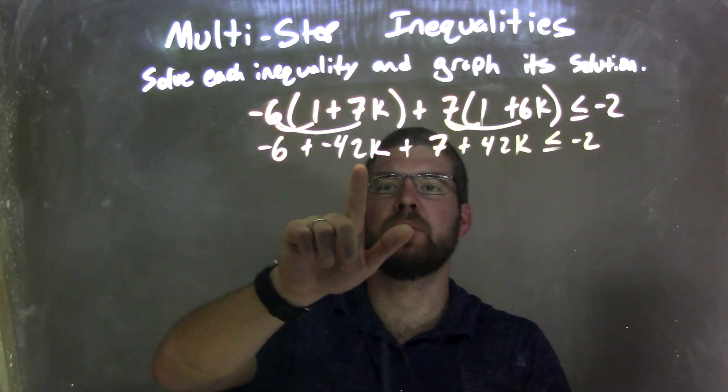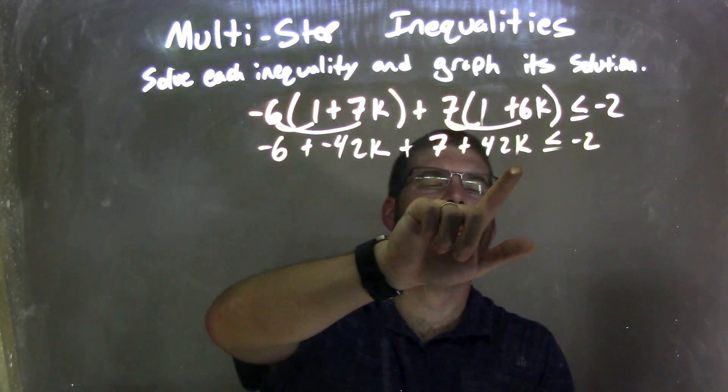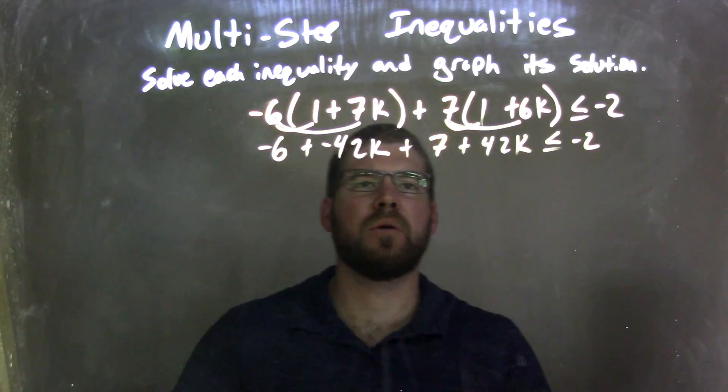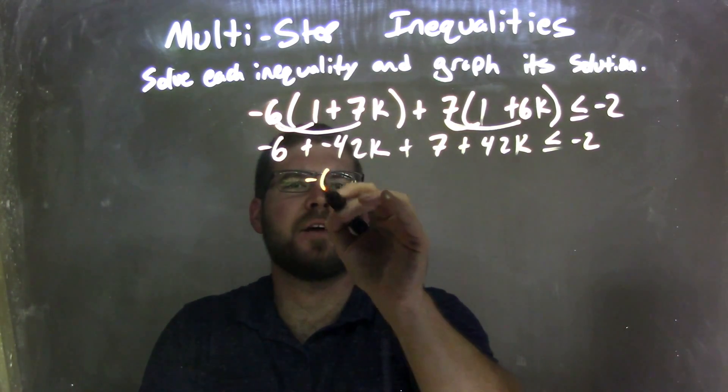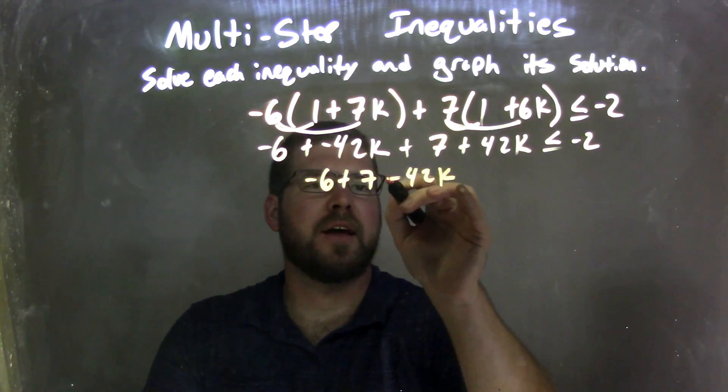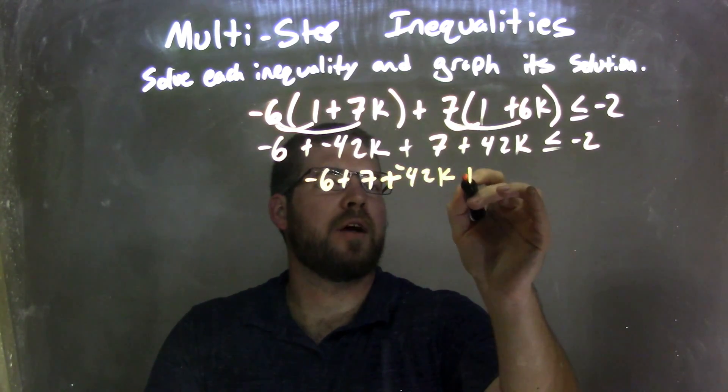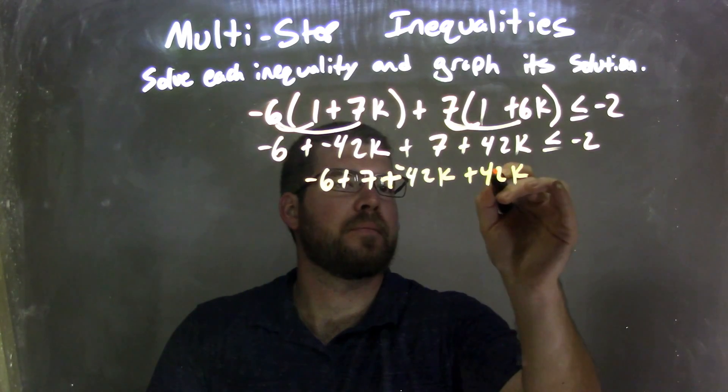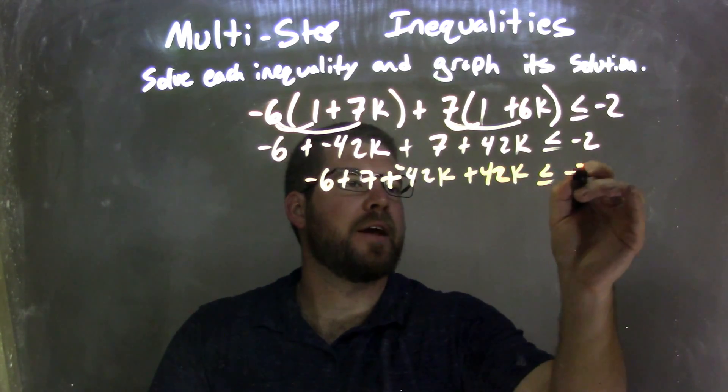So now let's combine our like terms. We have negative 42k and a positive 42k. Let's rearrange it so we can see it easier. So negative 6 plus 7 here minus 42k, or plus a negative I believe we had it as, plus 42k is less than or equal to negative 2.